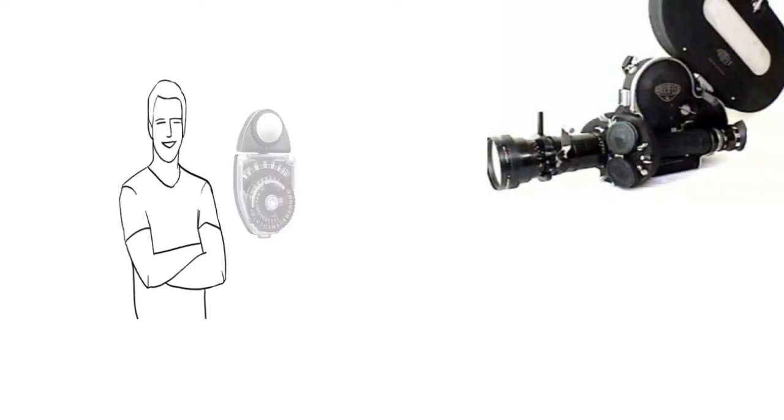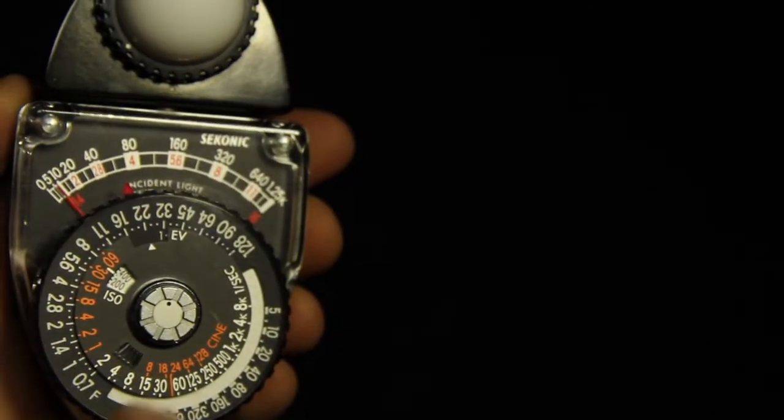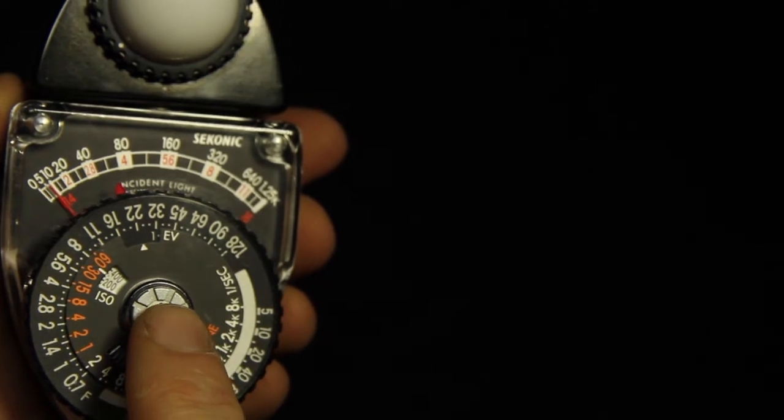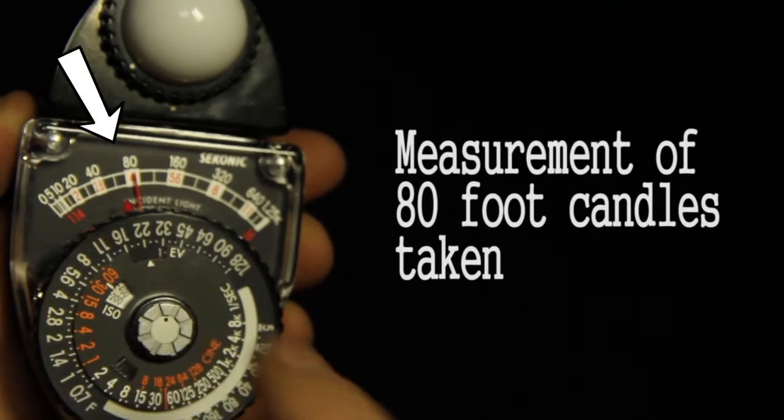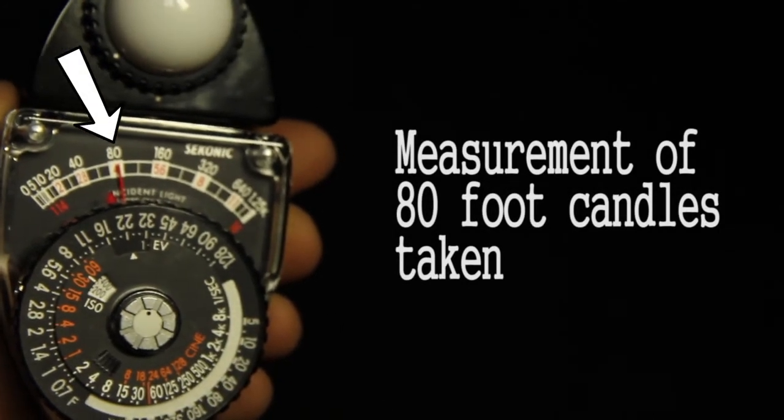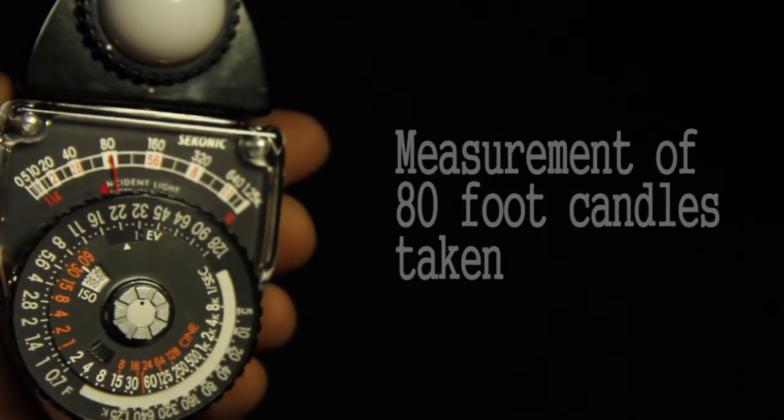For incident readings in normal indoor situations, point the Lumisphere in the direction of the camera from the subject's position. Press the silver stopper button to allow the meter needle to move to indicate the amount of light present. Release pressure on the silver stopper button when the needle stops to trap the needle in place.